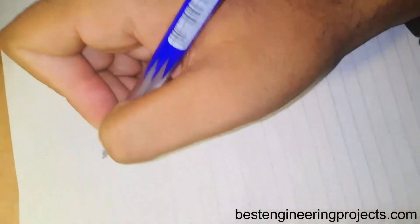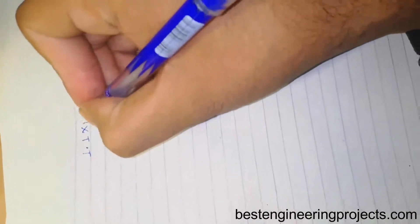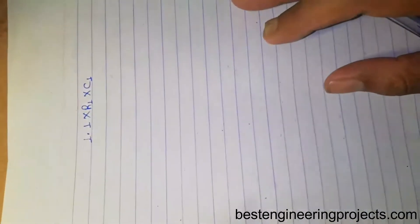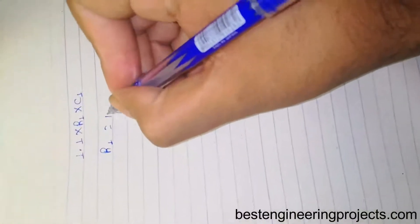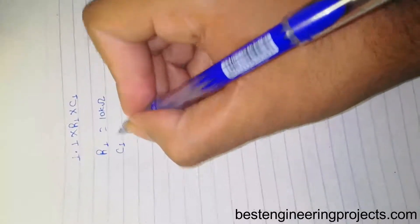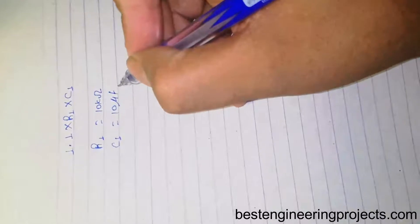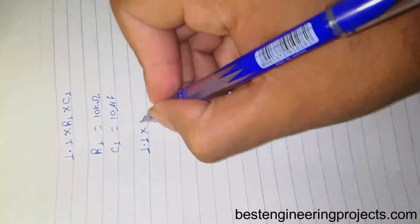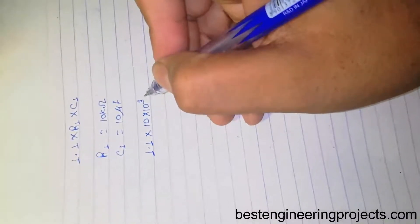The equation for monostable multivibrator mode is 1.1 times R1 times C1. For our circuit arrangement we used R1 equals 10 kilo ohm and C1 equals 10 microfarad. If we put these two values in the above equation, that is 1.1 times 10 times 10^3 ohms times 10 times 10^-6 farads.